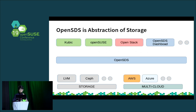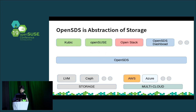Inside, used by OpenSDS, there are two categories. First is storage — this includes LVM, Ceph, Cinder, and more. This is the lower-left side in the slide. Second is multi-cloud — this includes Amazon S3, Azure Storage, and more. The upper-side systems use transparent storage and multi-cloud storages.